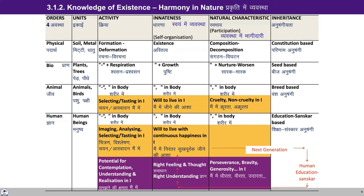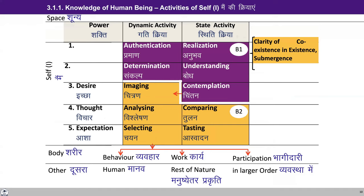As we studied earlier, the self in the human being has the will to live with continuous happiness. And this is fulfilled by right feeling and right thought, which is fulfilled by right understanding. For that, we need the education-sanskar because this process will only ensure this competence in the self of the human being, and then it can go from one generation to another generation. Now we can relate the study of the four orders with the activities of the self.